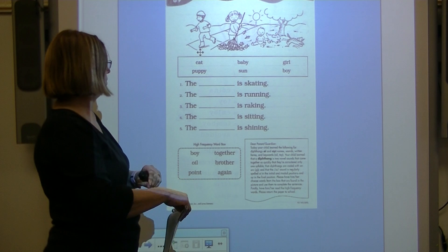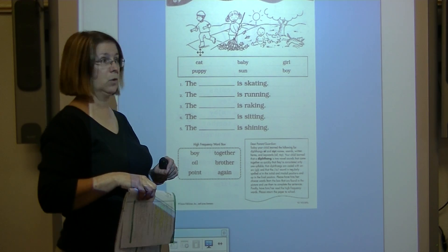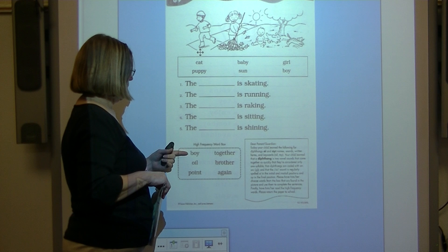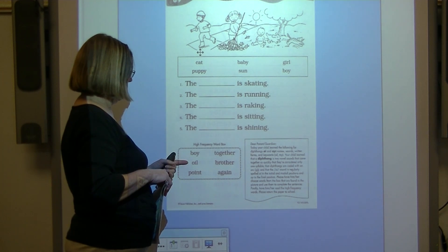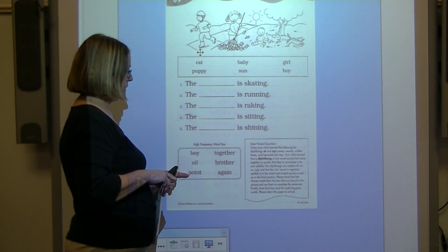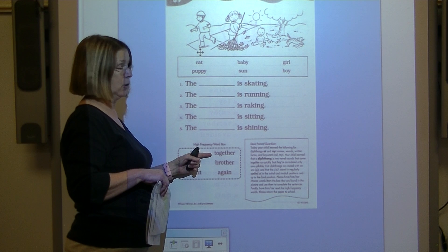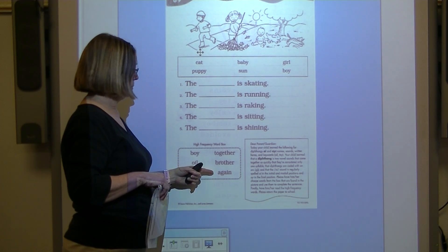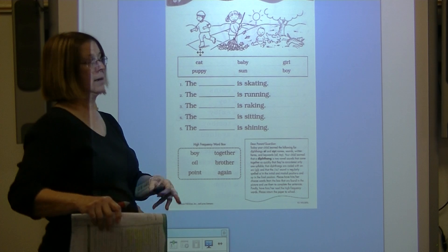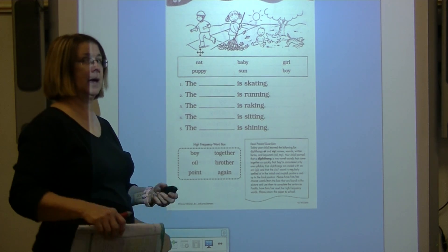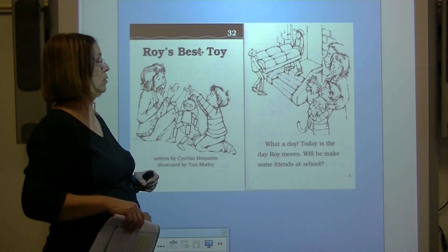You're going to use these words to fill in these blanks to complete the sentences. And now we're going to read the words in the high frequency word box. Read with me. Boy, oil, point, together, brother, again. Lay that to the side. You can come back to that after we do decodable number 32.